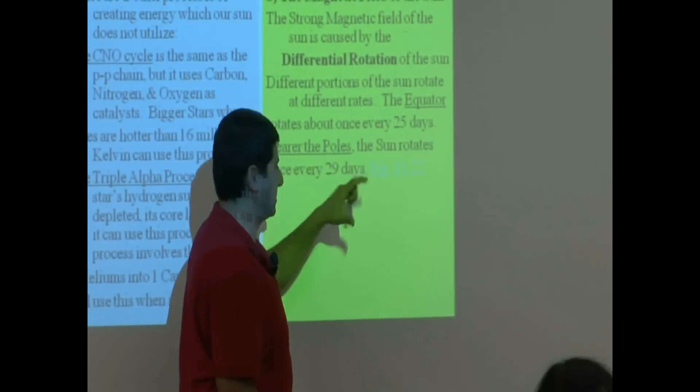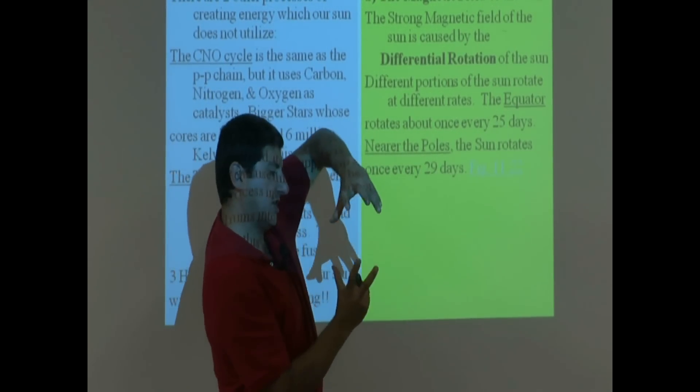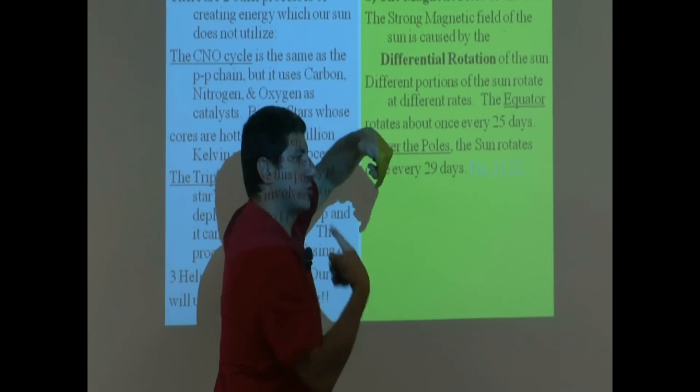But on the Sun, since it's a weird gaseous structure, the poles can rotate slower and the equator can rotate faster.